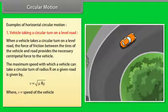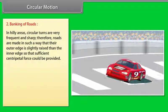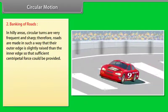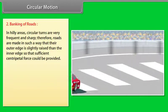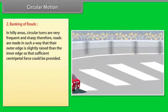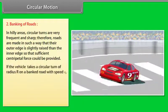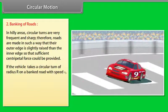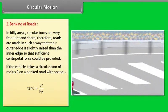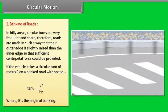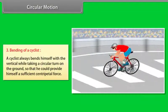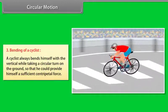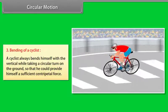Where V is the speed of the vehicle and μ is the coefficient of friction. Banking of roads: in hilly areas, circular turns are frequent and sharp, so roads are made with the outer edge slightly raised than the inner edge to provide sufficient centripetal force. If a vehicle takes a circular turn of radius R on a banked road with speed V, then tan θ = V²/Rg, where θ is the angle of banking. A cyclist always bends towards the vertical while taking a circular turn so that sufficient centripetal force can be provided.